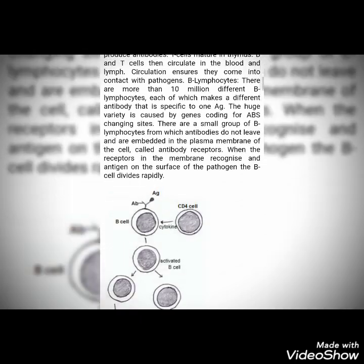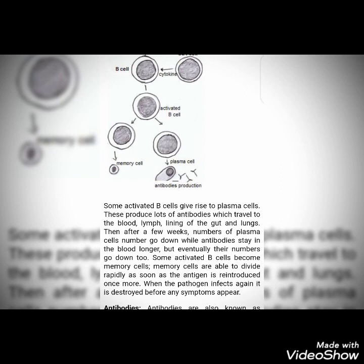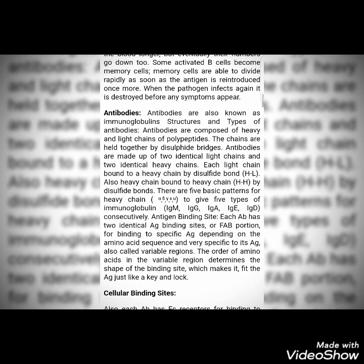When the receptor on the membrane recognizes an antigen on the surface of a pathogen, the B cell divides rapidly. B cells first divide into plasma cells and memory cells. CD4 cells secrete cytokines to B cells, which then become activated and divide into activated B cells. Some activated B cells give rise to plasma cells, which produce lots of antibodies that travel to the blood, lymph, and lining of the gut and lungs. After a few weeks the number of plasma cells decreases, and some activated B cells become memory cells, able to divide rapidly when the antigen is reintroduced, destroying the pathogen before any symptoms appear.